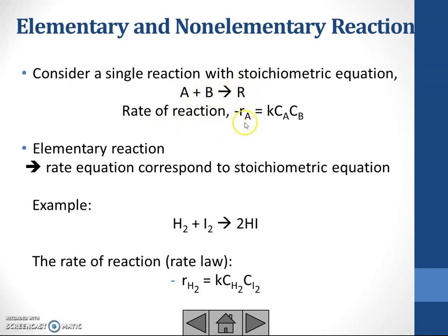the rate of reaction will become negative RA equals to KCACB because the concentration we are referring to the reactant that we have in the reaction. This is a single reaction with stoichiometry equation only.